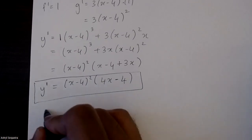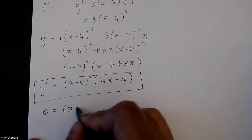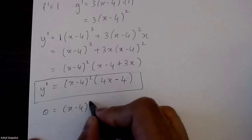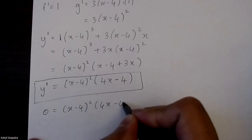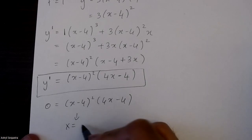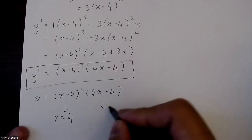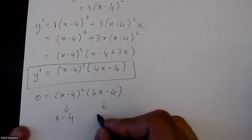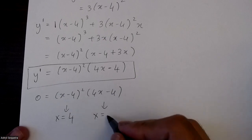This is my most simplified derivative equation. Setting it equal to 0 to find my critical points: from (x minus 4)² = 0, the critical point is x = 4, and from 4x minus 4 = 0, the critical point is x = 4/4, which is 1.